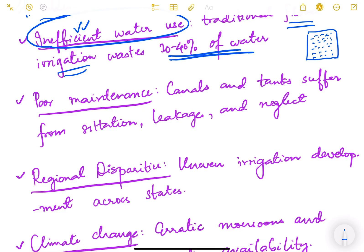Then the next one is poor maintenance. Whatever irrigation systems we have created suffer from poor maintenance. The canals and tanks that we have created suffer from siltation, leakages, and neglect.